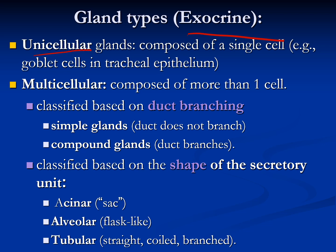Exocrine glands can be divided into two types: unicellular and multicellular. When a gland is composed of only a single cell, we call it unicellular — the best example in our body is the goblet cell, which is responsible for mucus production. The other type, multicellular, is composed of more than one cell.